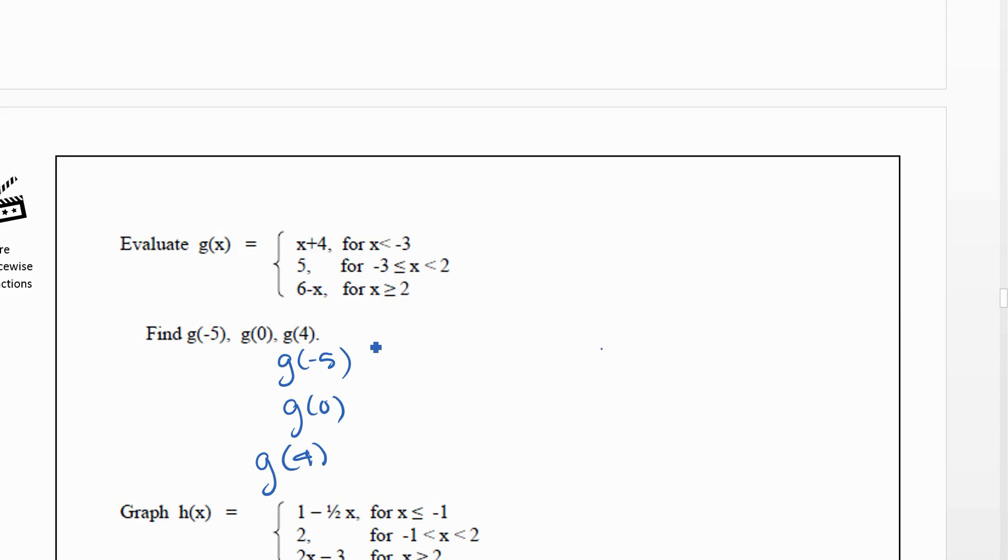So g(-5): well we see that -5 is less than -3, so we're going to plug it into that top one. We would have -5+4 is -1. So g(-5) is -1.